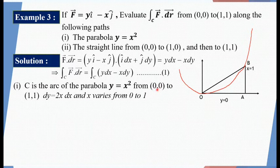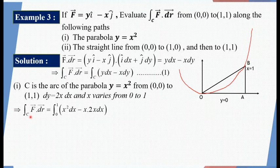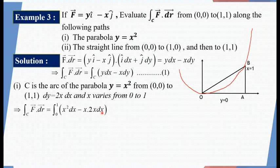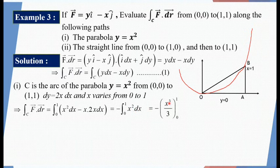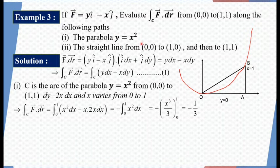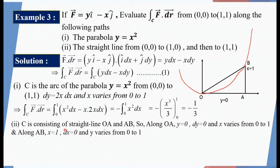Substituting into the integral for Case 1: integral from 0 to 1 of x²dx minus x·(2x dx) equals integral from 0 to 1 of x²dx minus 2x²dx equals integral from 0 to 1 of minus x² dx. The integral of x² is x³/3, so putting in limits 0 to 1 gives minus 1/3. This is the required value when the path is along the parabola y equals x².